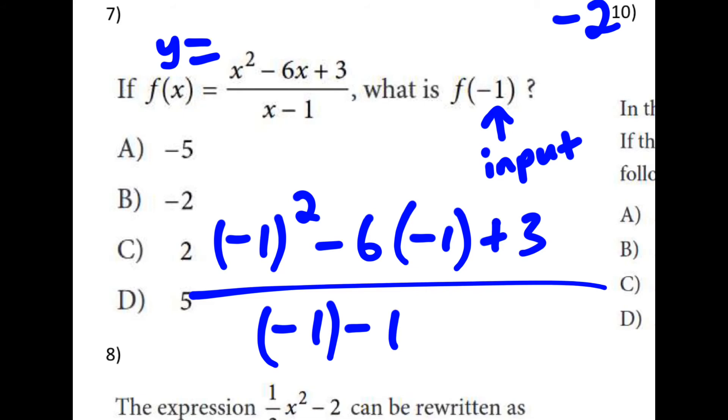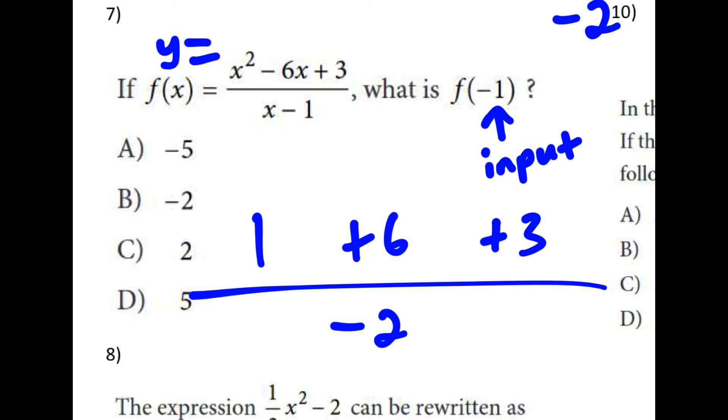And I can do some simplification here. Negative 1 squared becomes 1. If I multiply negative 6 times negative 1, that comes out as a positive 6. On the bottom, if I take negative 1 minus 1, I get negative 2. If I combine my numbers on the top, I get 10. And if I simplify here, I get negative 5.